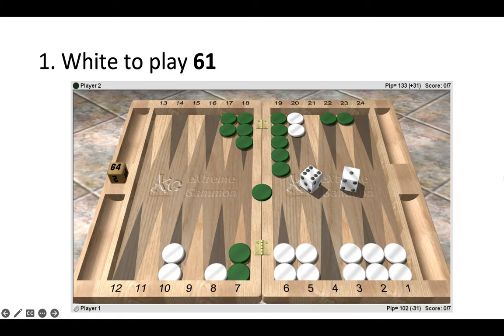In this first position, white has a 6-1 to play. Notice the score, it's 0-0 in a match to seven, and green has one checker on the bar. How do we go about playing this 6-1?